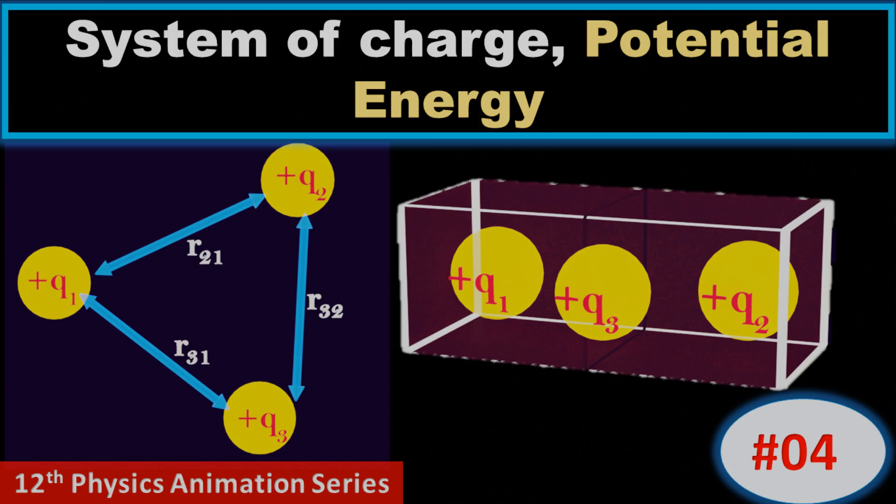To understand this, let's take a positive charge q1 from infinity to a certain position. Let's assume we fixed the charge in this position. Now when we want to bring another charge q2 close to the charge q1, we will need to do work to overcome the repulsive force of the positive charge q1.